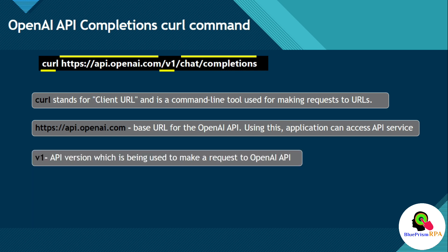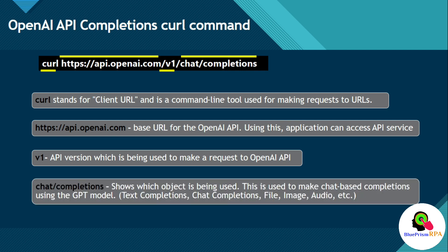chat/completions shows which object is being used. This is used to make chat-based completions using the GPT model. We have a few other objects like text completions, chat completion, file objects, image, audio transcription, and so on — there are lots of things. You can learn about these objects in detail from the API reference. For example, you can see object equals chat.completion for chat, or audio transcription for audio, text completion for completions, and embedding for embeddings.